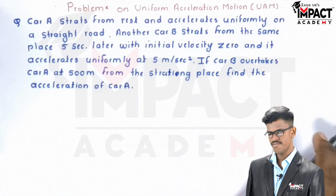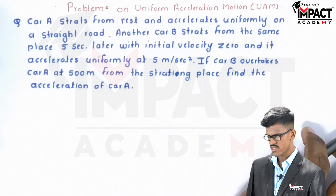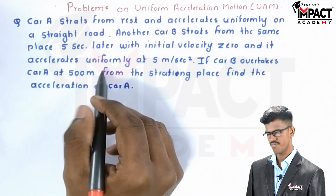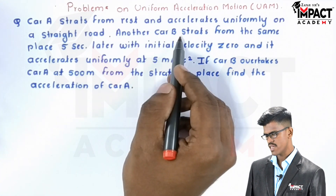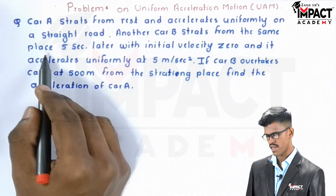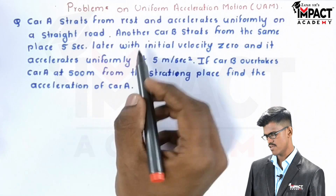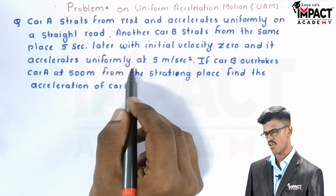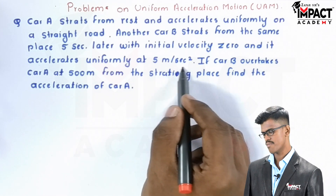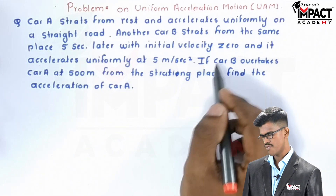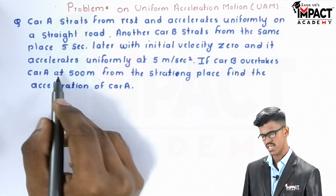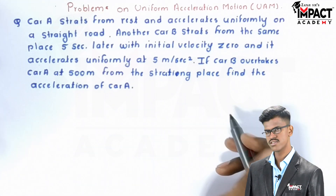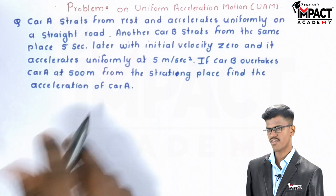Here is the question. A car A starts from rest and accelerates uniformly on a straight road. Another car B starts from the same place 5 seconds later with initial velocity 0 and accelerates uniformly at 5 meter per second square. If car B overtakes car A at 500 meters from the starting place, find the acceleration of car A.